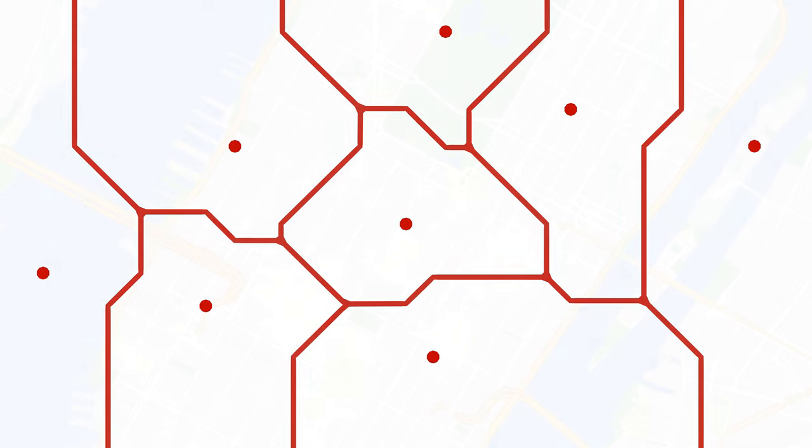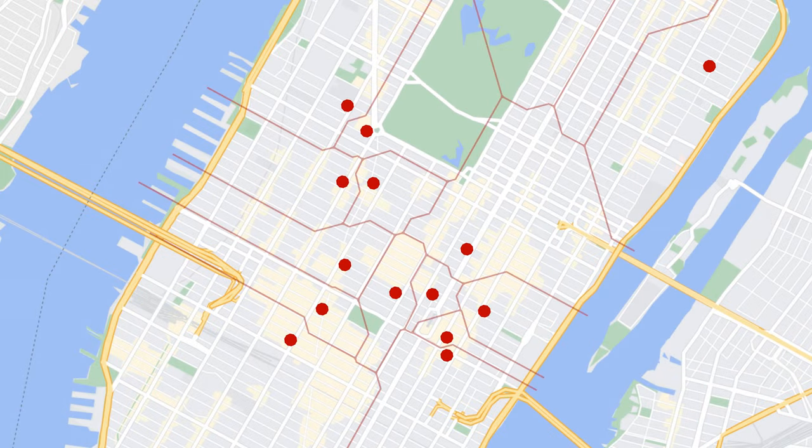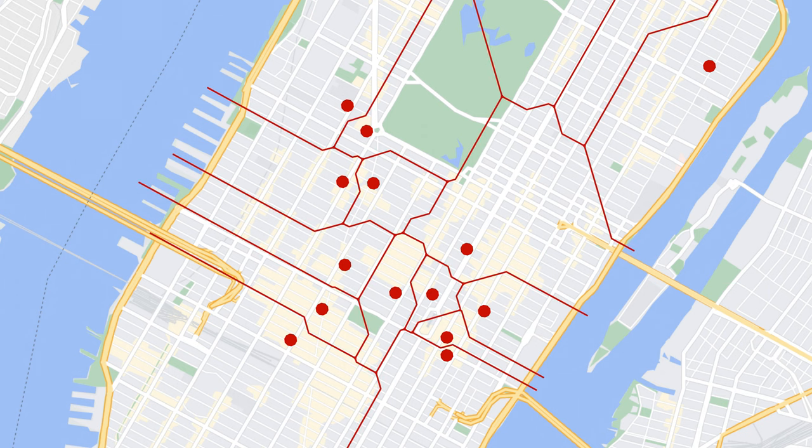For a more practical example of how we can use this Voronoi diagram, imagine that each of these points is a Starbucks. The Voronoi diagram will describe where people are most inclined to go. People in this sector are more likely to go to this Starbucks than people in this sector are to go to this Starbucks. A taxicab Voronoi diagram like this can be especially useful for businesses that operate in cities with a grid-like road structure, as they can tell you where customers are most likely coming from.